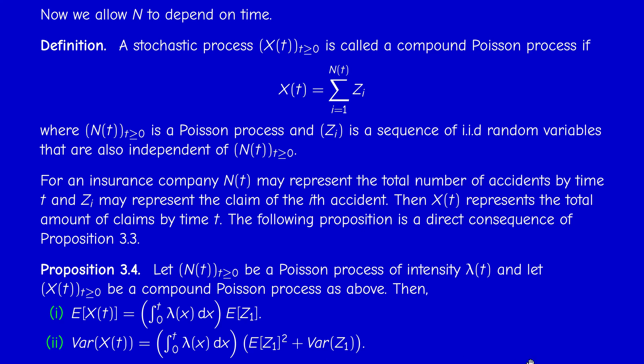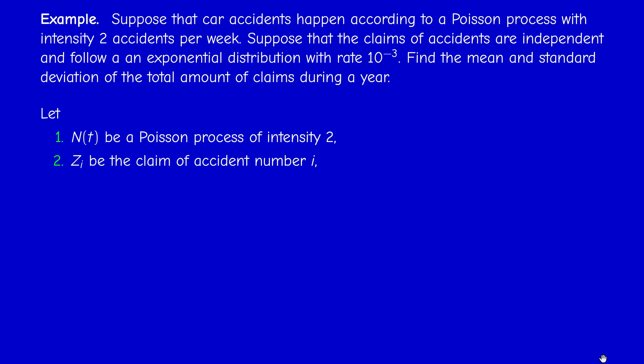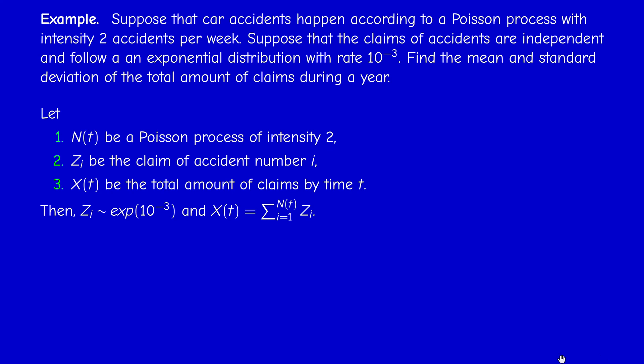Now let us work through an example. Suppose car accidents happen according to a Poisson process with intensity 2 accidents per week, and claims are independent and follow an exponential distribution with rate 10⁻³, so the mean claim is 10³ = $1,000. We want to find the mean and standard deviation of total claims during a year. Let N(t) be the Poisson process with intensity 2, Z_i the claim of accident i, and X(t) the total claims — so X(t) is a compound Poisson process.